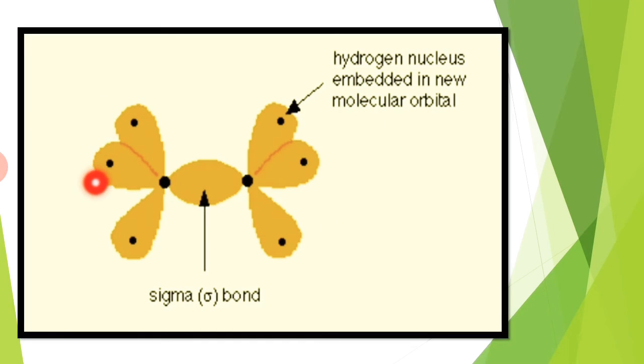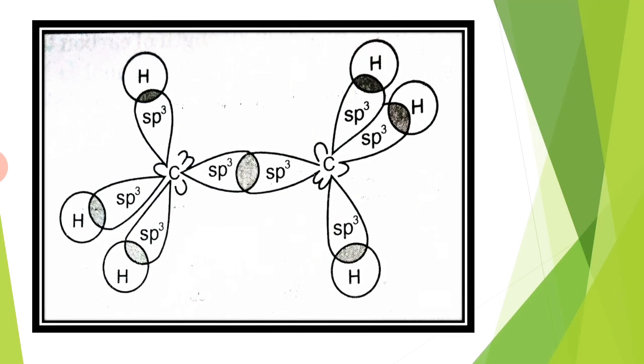One of the four sp3 hybrid orbitals of one carbon atom overlaps with the other similar orbital of carbon atom to form the carbon-carbon sigma bond. The remaining three sp3 hybrid orbitals overlap with the 1s orbital of hydrogen atoms, forming C-H sigma bonds as shown in the figure.